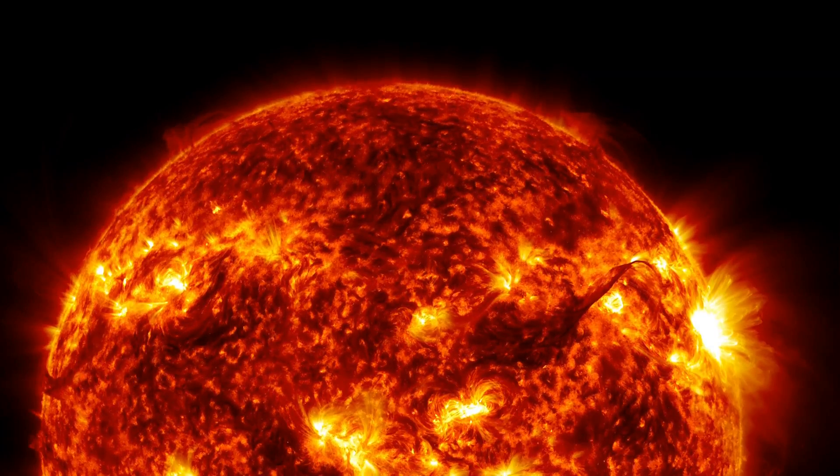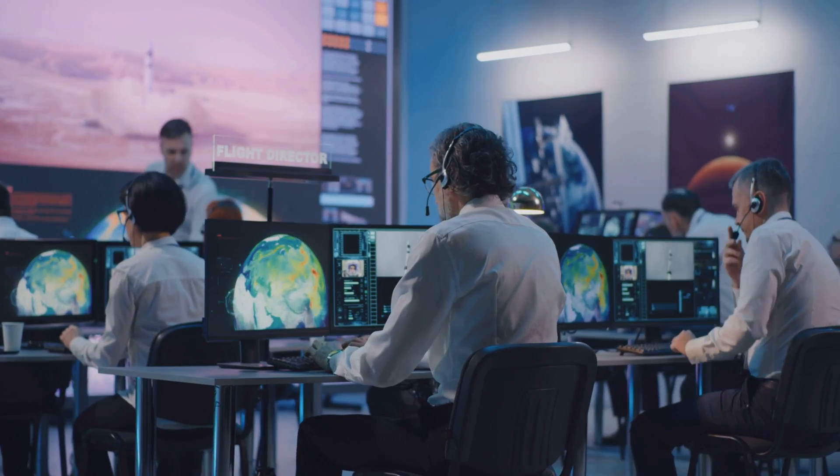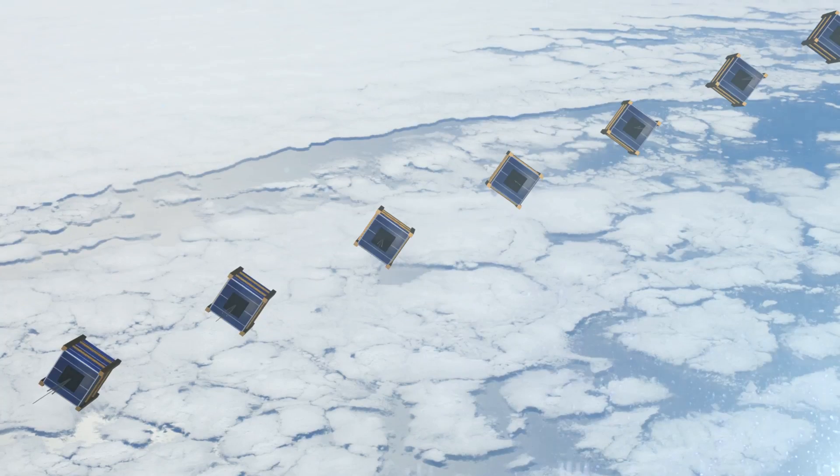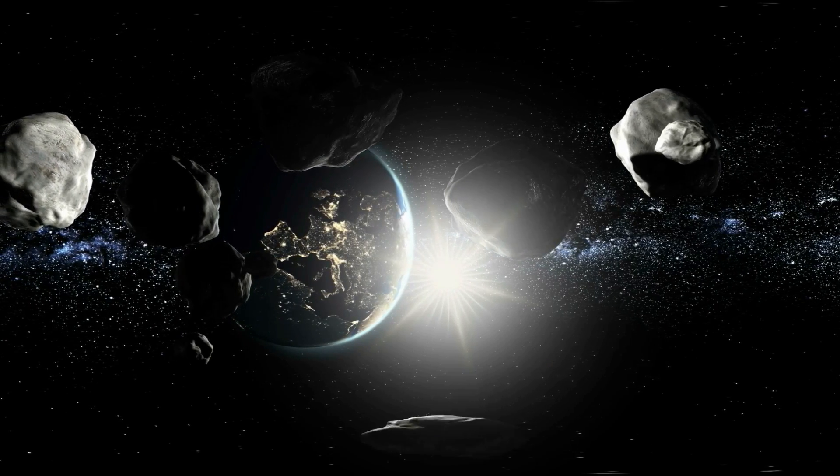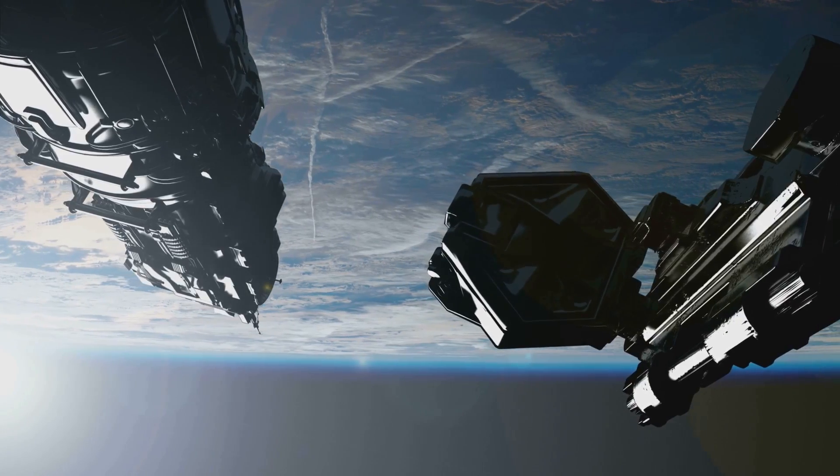The sun's eventual sterilization of Earth is billions of years away, but it inspires bold ideas. One proposal, build a giant solar shield or a swarm of shades at the L1 Lagrange point to block some sunlight. Another, gradually move Earth's orbit outward using gravitational assists from asteroids or comets. The engineering challenges are immense but not impossible in theory.